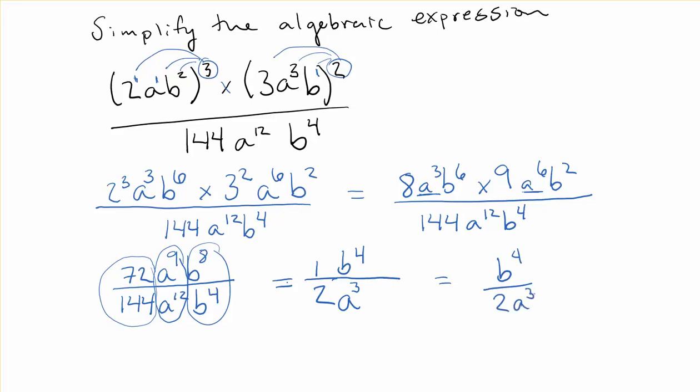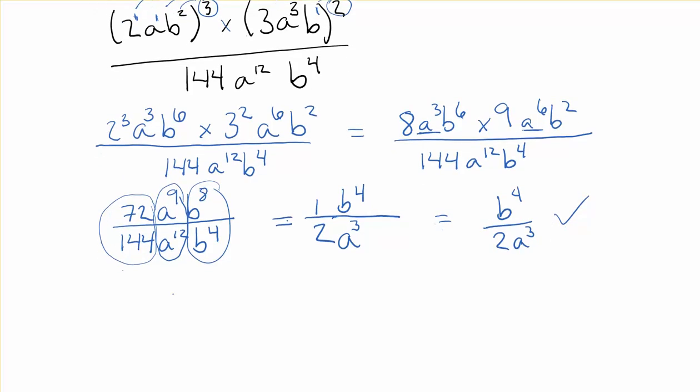And just so people see that, if they are thinking about, I mean, this is a fine answer. You can stop there. But if you are thinking about subtracting powers when you are dealing with the exponent rules and you're dividing here, just so people get a chance to see that, that a 9 minus 12 becomes negative 3. And then that b becomes b positive 4, because it's always top minus bottom. 8 minus 4 is just positive 4. And this 72 over 144 still simplifies to 1 half.